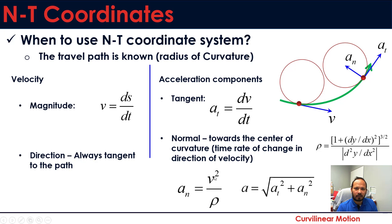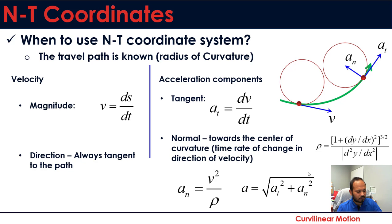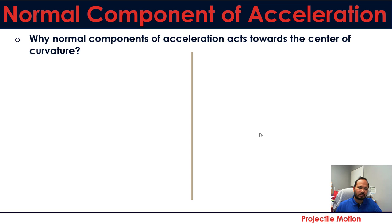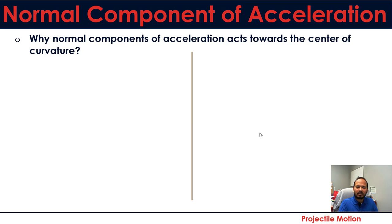Once you have both components, the magnitude of total acceleration is found using the Pythagorean theorem: the square root of the sum of squares of the tangential and normal components. An important point of focus: some students are confused about whether the normal component acts toward the center or outward. By definition, it acts toward the center of curvature — but why?